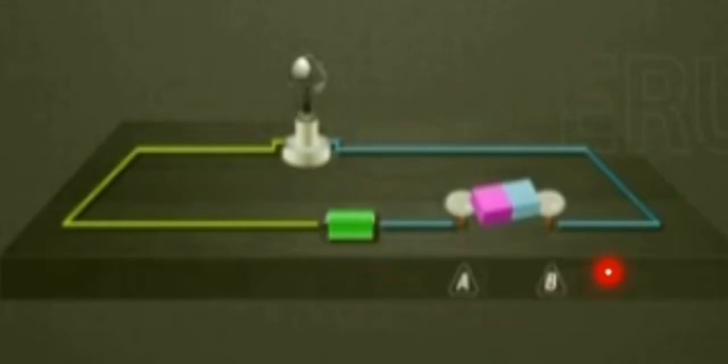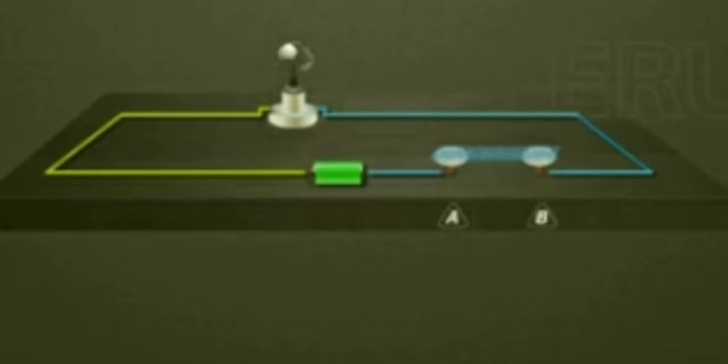When eraser is placed in between, the bulb does not glow because it is made up of rubber. When plastic scale is placed in between, the bulb does not glow as it is made up of plastic.